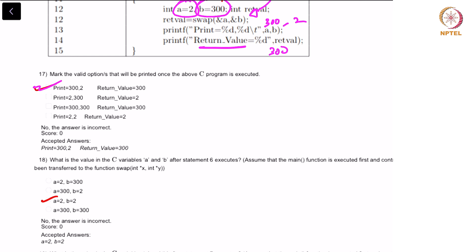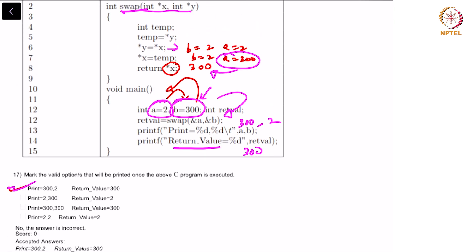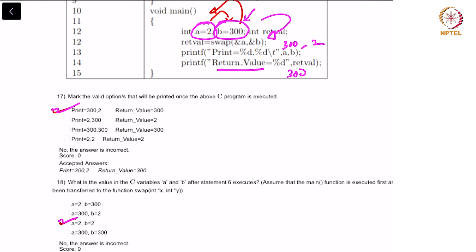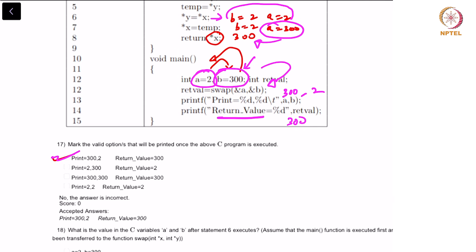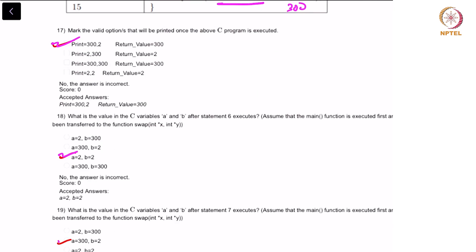What is the value of the C variables a and b after statement 6 executes? Assume the main function is executed first. Once statement 6 alone executes, the value of a and b is 2 and 2, and hence that is the answer. What is the value of a and b after statement 7 executes? That is also present here — b is equal to 2 and a is equal to 300.